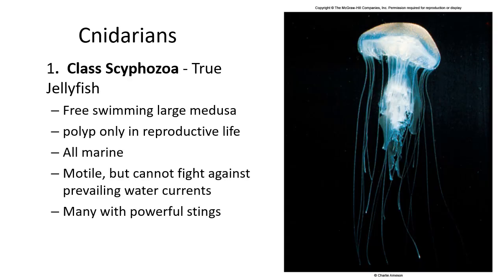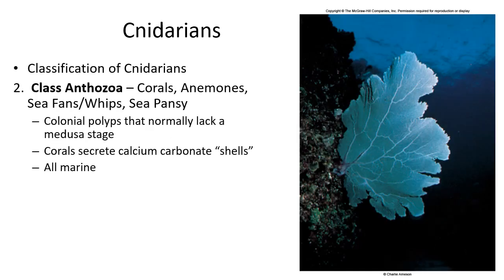The different classes of cnidarians: Scyphozoa are your jellyfish, generally medusoid in form with only a brief polyp stage. All of them are marine — there are no freshwater jellyfish. They are plankton, so they can move but can't fight against the current, and they often have very powerful stings.